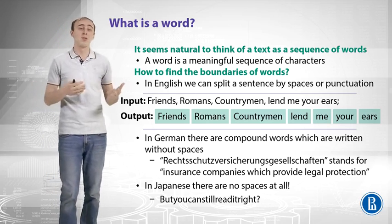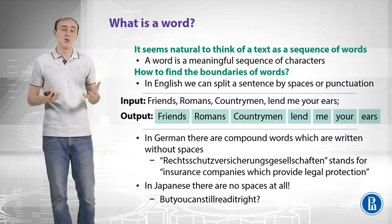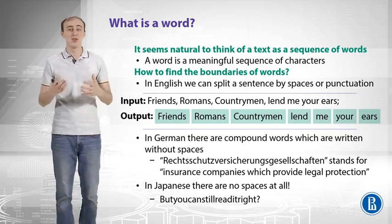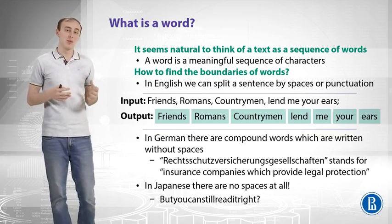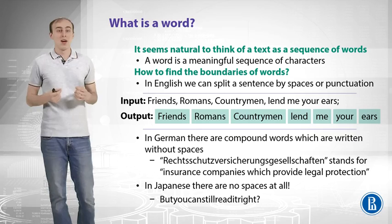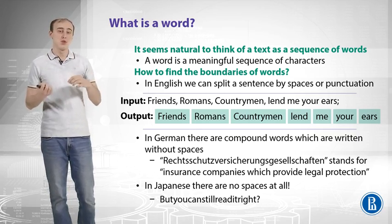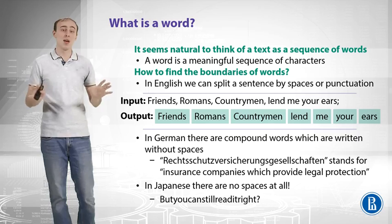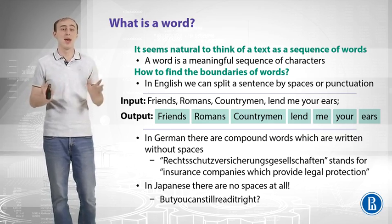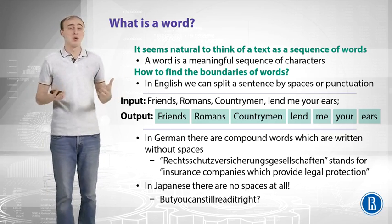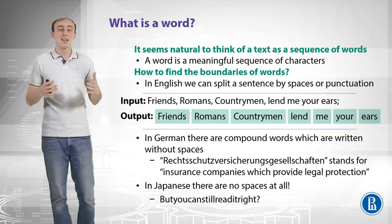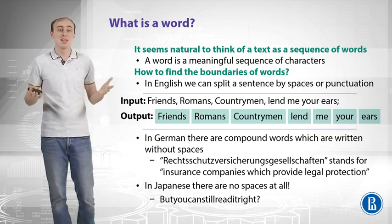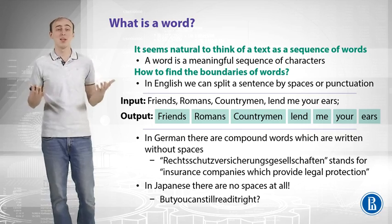It can be more difficult in German because German has compound words written without spaces. The longest word still in use — visible on the slide — stands for insurance companies that provide legal protection. For analysis, it could be beneficial to split that compound word into separate words since each part has meaning; they're just written without spaces. Japanese is a different story — it doesn't have spaces at all, but people can still read it, and even English text written without spaces can be read by humans without much problem.